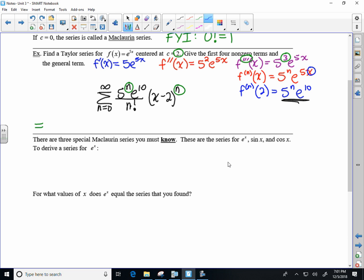So if I plug in a 0 for n, I'm just left with an e to the 10th power. So then I need, and that's a non-zero term, so that's good. The second one would be, I'm plugging in a 1, so 5e to the 10th over 1. So 5e to the 10th times x minus 2.